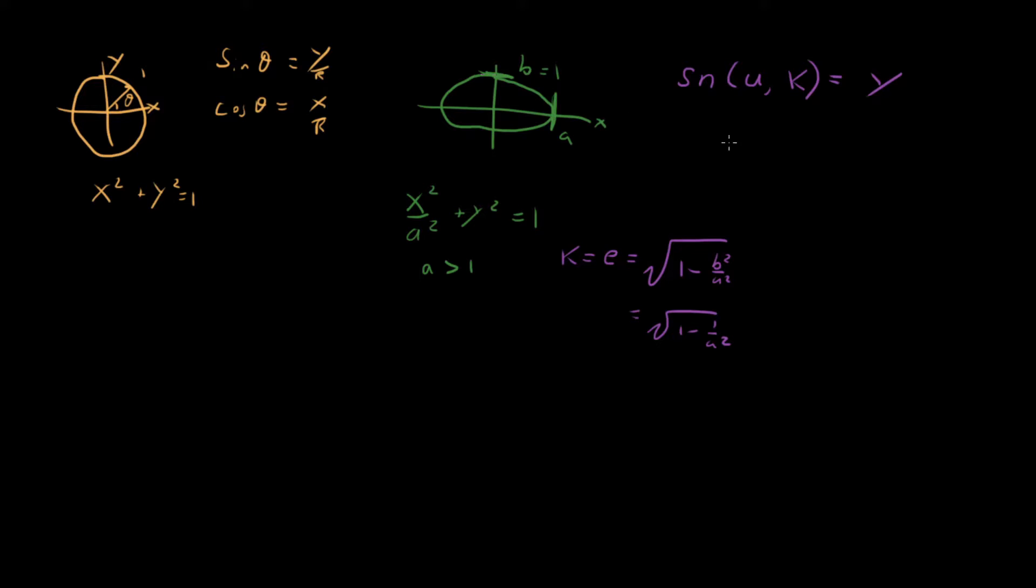And then the cosine equivalent, which I'm going to call cn, in terms of u and k, is equal to, well, we could just say x, kind of like in this case.